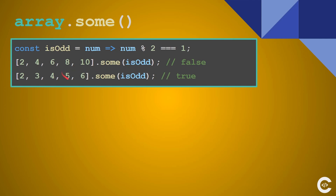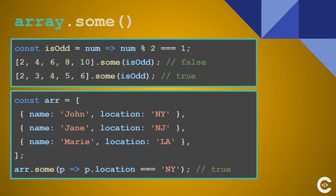The second example evaluates to true because there are elements which satisfy the condition. We have a similar array and we are evaluating if the location is New York for at least one object in the array, and this evaluates to true.